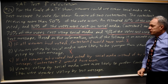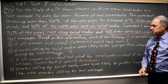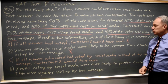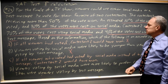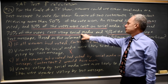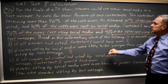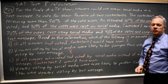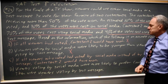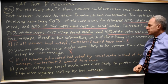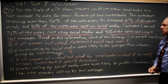Choice C: if all viewers who voted had voted by social media instead of by text message, contestant two would have won. While contestant two earned 70% of votes cast using social media, you cannot conclude that viewers who were willing to text a vote for the other contestant would have changed their vote if they had voted on social media instead. So choice C cannot be concluded.